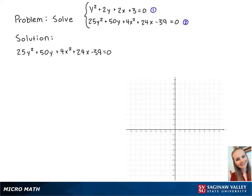We're going to use the process of elimination, so first we're going to multiply the first equation by 25 so that we have 25y² + 50y + 50x + 75 = 0. Now we can subtract the two equations.